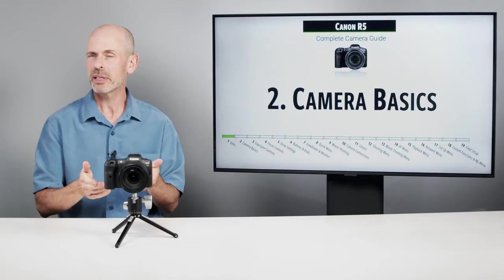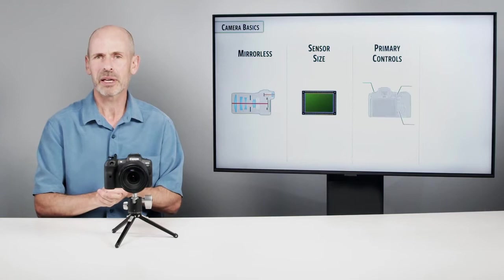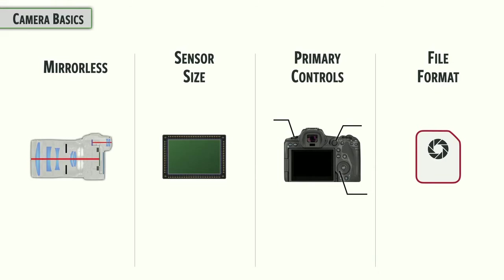Here in Camera Basics, we're going to look at a few simple things but also a few important things. We'll talk for just a quick minute about what type of camera and the sensor in it. Then we're going to look at the primary controls and the file format, one of the most important settings you can make on the camera.